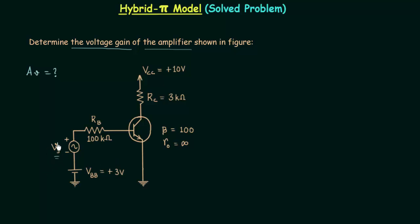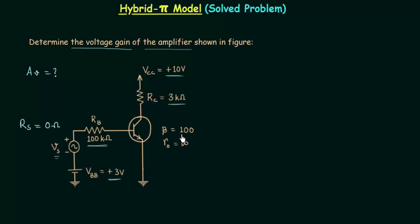Vs is the source voltage and there is no source resistance, meaning Rs is equal to 0 ohms. Vbb is the biasing voltage equal to plus 3 volts. Vcc is the biasing potential equal to plus 10 volts. Rb is the base resistance equal to 100 kilo ohms. Rc is the collector resistance equal to 3 kilo ohms. β the amplification factor is equal to 100 and the output resistance of transistor R0 is equal to infinity.